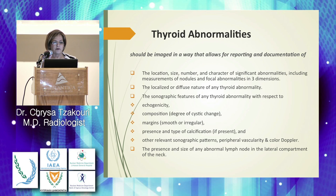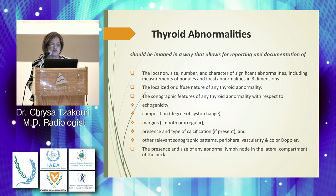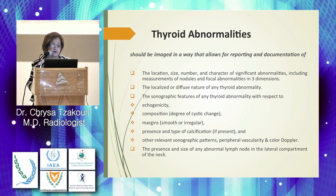Thyroid abnormalities should be reported and documented with location, size, number, and character of significant findings, including measurements in three dimensions. Reports should include the localized or diffuse nature of any thyroid abnormality, and sonographic features such as echogenicity, composition, degree of cystic change, margins (smooth or irregular), presence and type of calcification, peripheral vascularity on color Doppler, and the presence and size of abnormal lymph nodes in the lateral compartment.